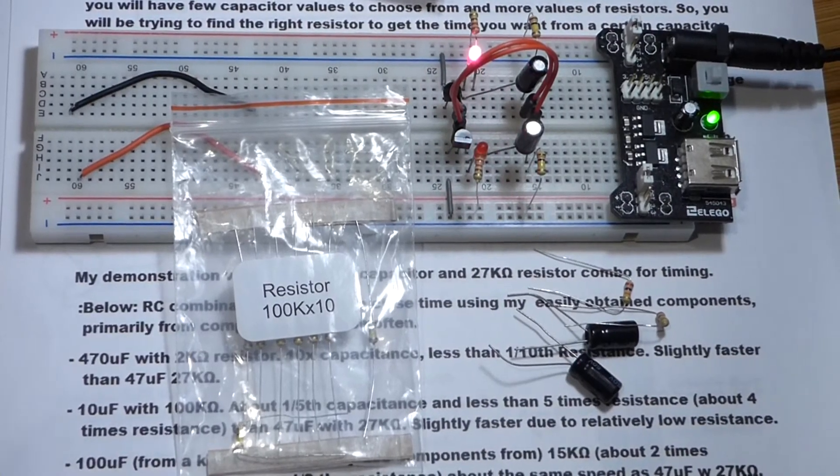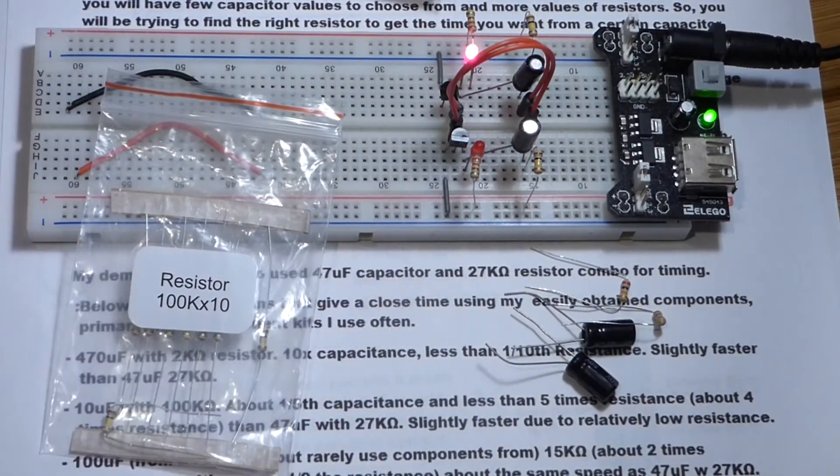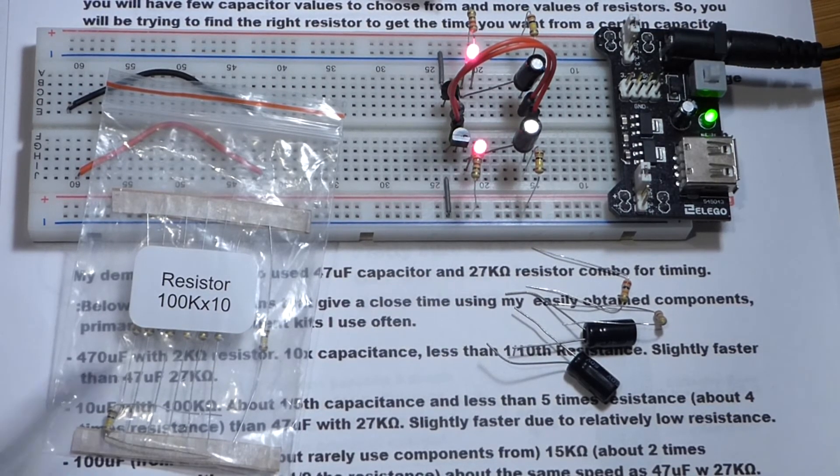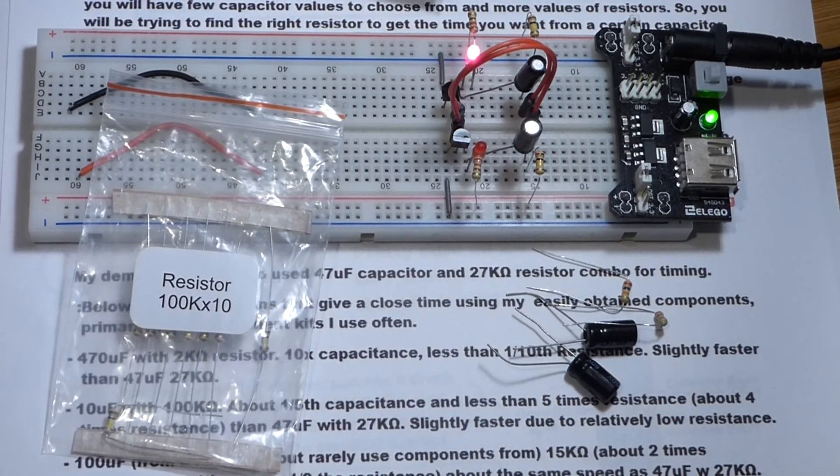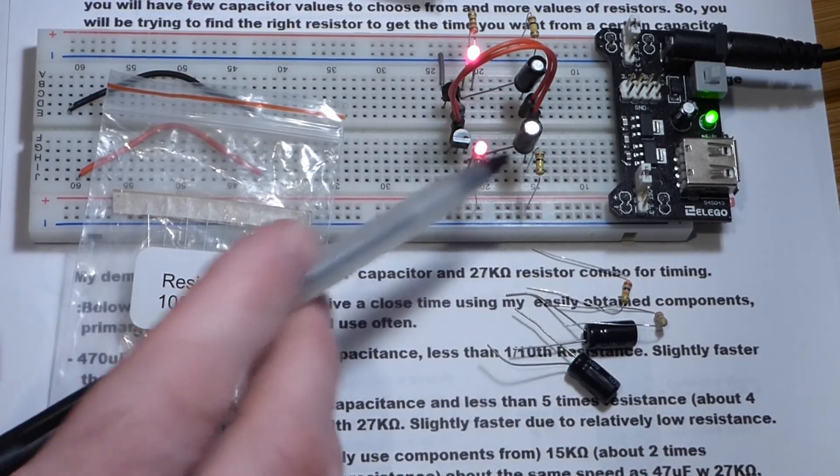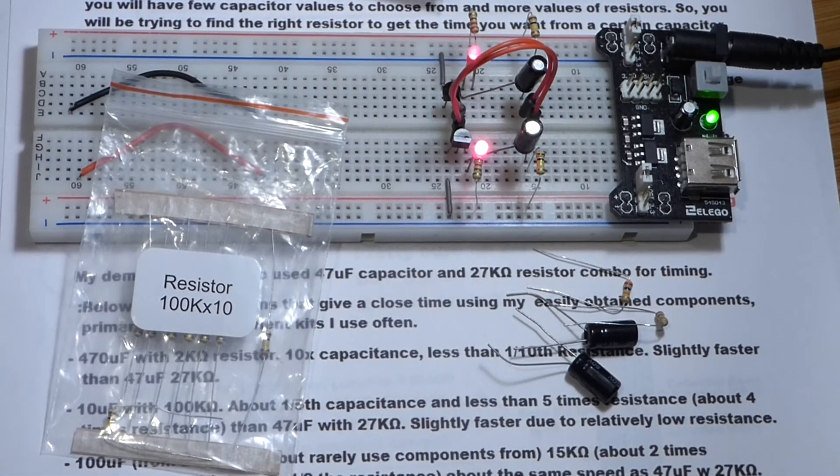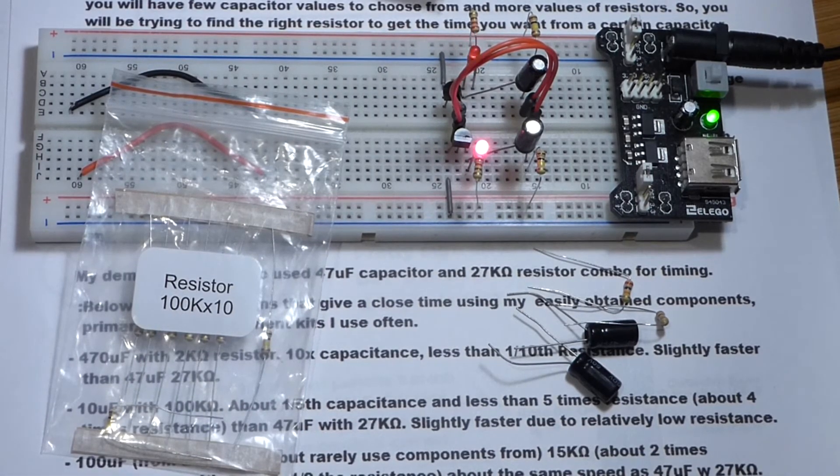And now, I am done with the swap, and you can see it's going a bit faster. Not a whole lot faster, but a bit faster. And that's because we gave it about four times the resistance instead of five times the resistance.